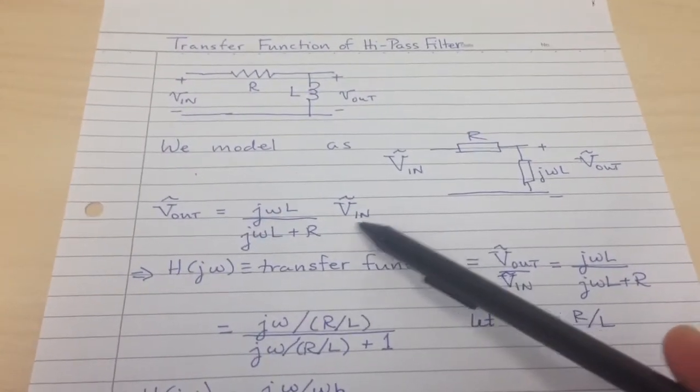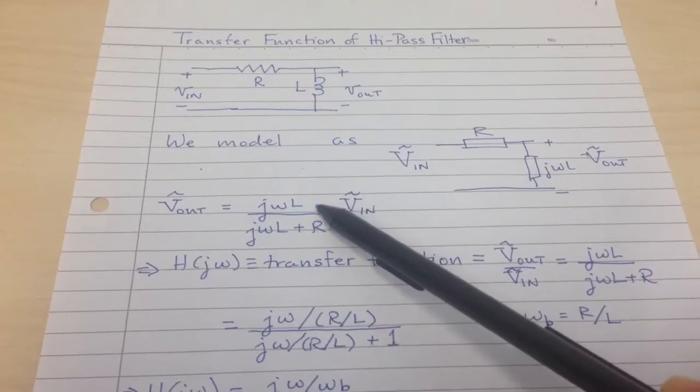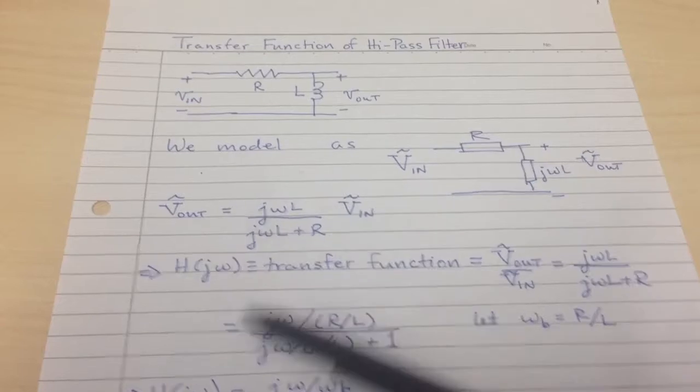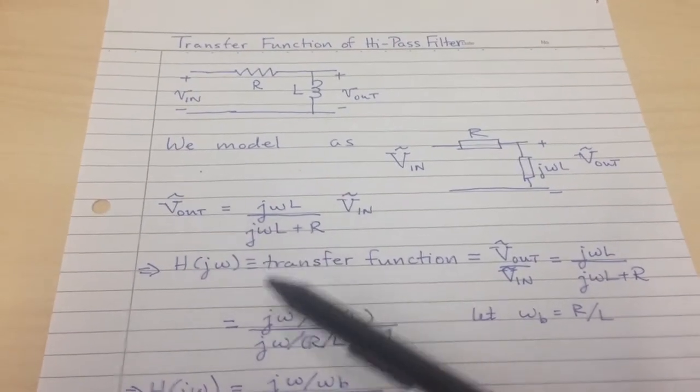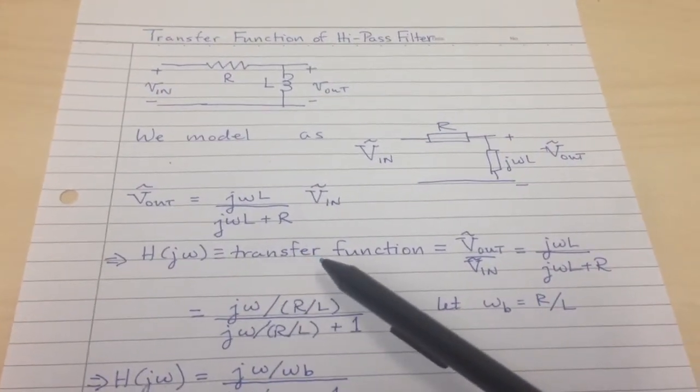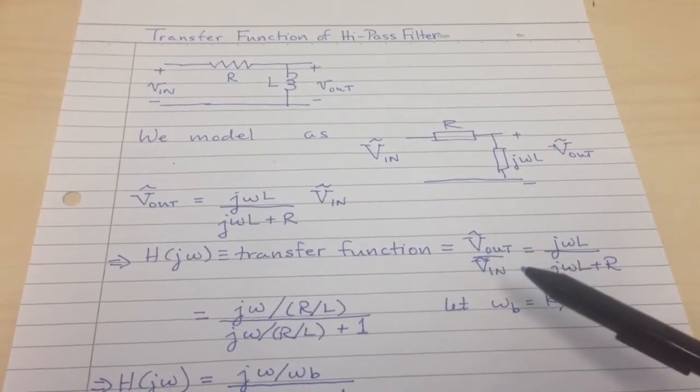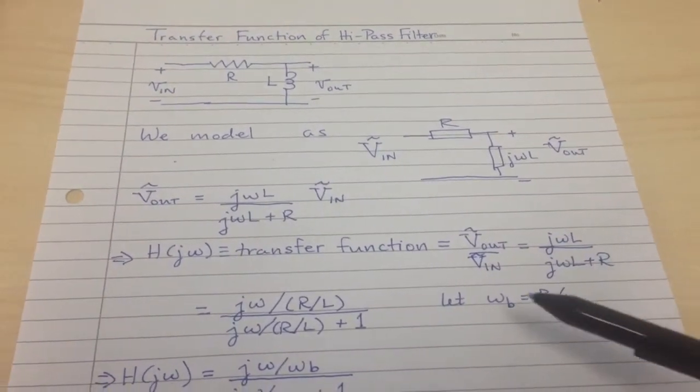Because it's just a DC network, we can just use our voltage divider relations. We have j omega L over j omega L plus R, and we end up with the output voltage. The transfer function is the complex ratio of these two complex amplitudes, V out over V in, and it's just going to be the voltage divider relation.